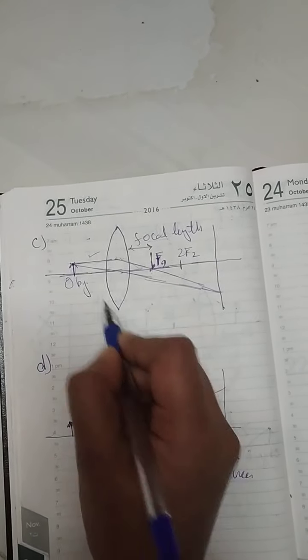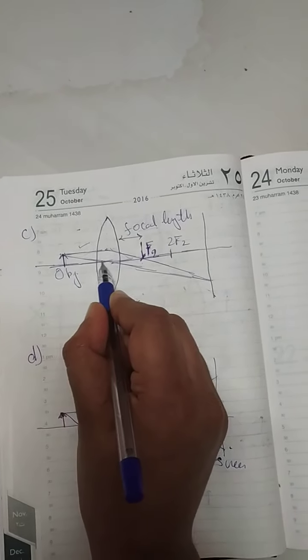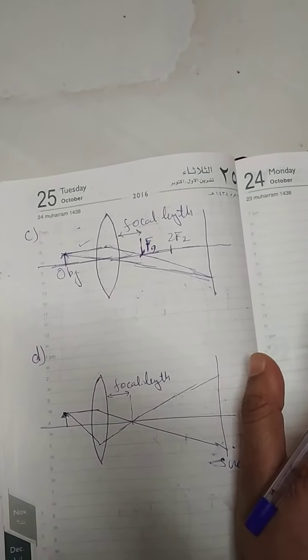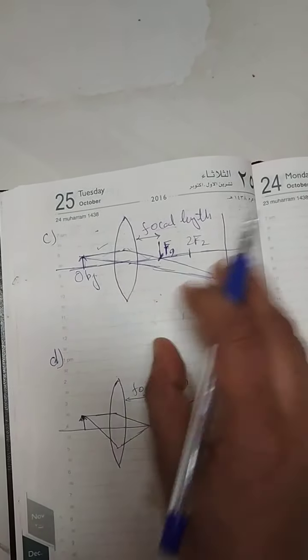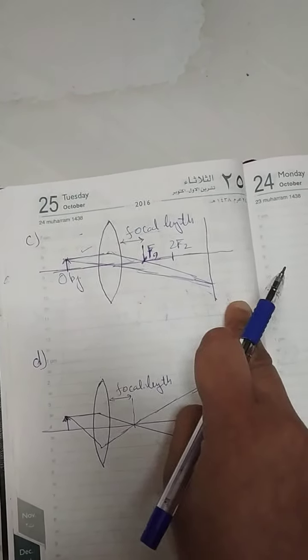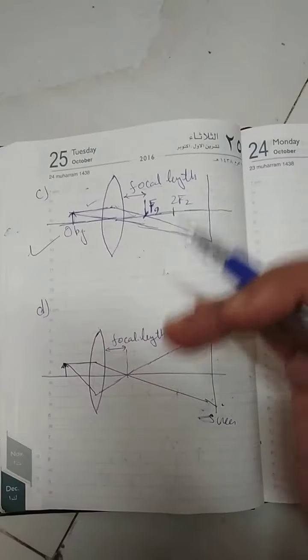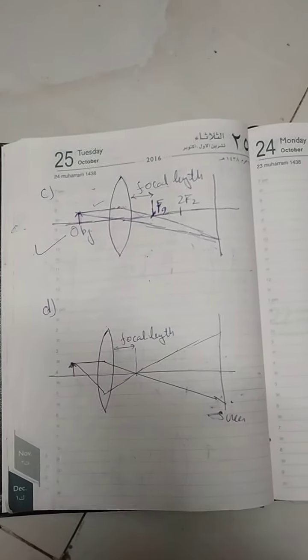Whatever goes through the optical center goes straight and never bends. So this diagram is correct because it's following all the rules of lens.